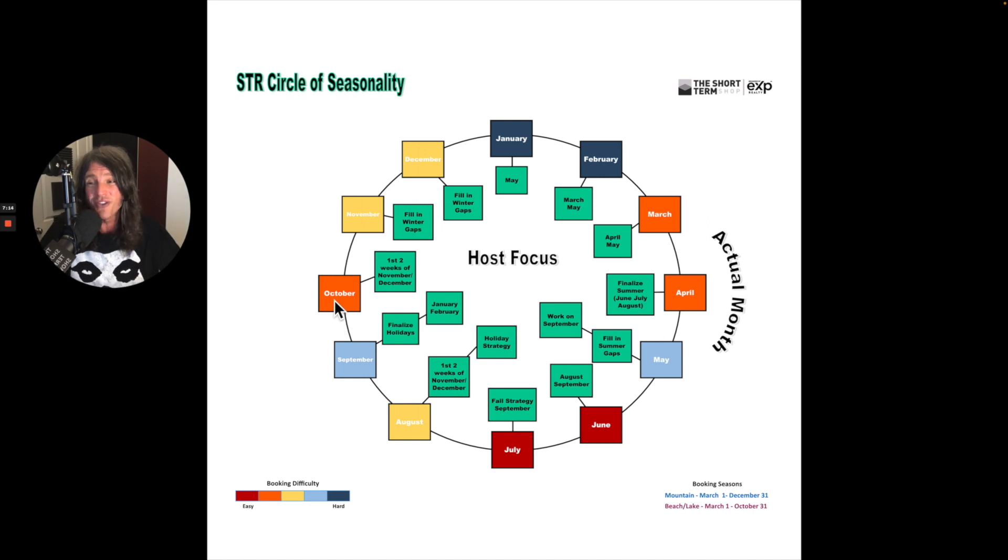And then October. October should be a fairly easy month to book, assuming you don't go too high on your prices. I see a lot of folks that are very excited about October and think that they got this huge good diamond in the rough there with October, month number 10. And a lot of times it can backfire and you end up pricing it too high. So October, again, fairly easy but don't make any mistakes there.